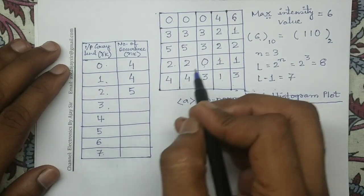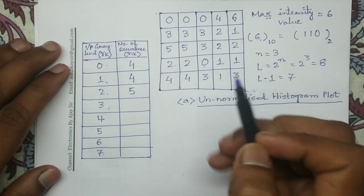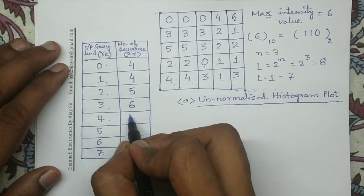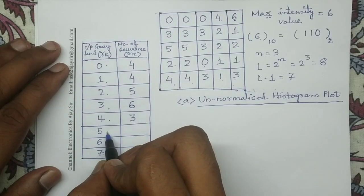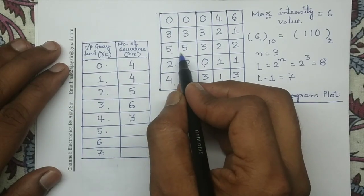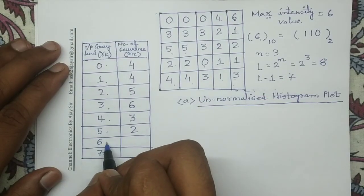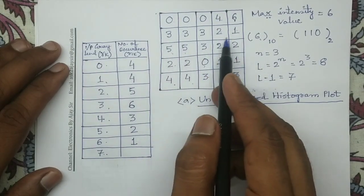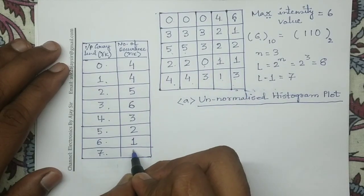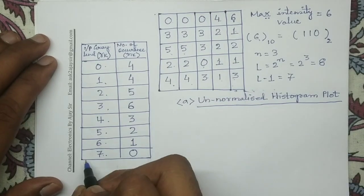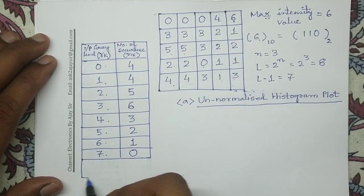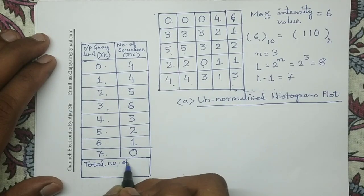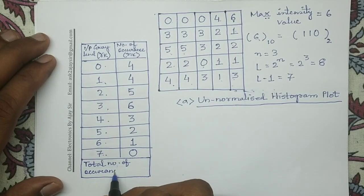For input gray level equals to 3, its corresponding number of occurrence is 6. For input gray level equals to 4, its corresponding number of occurrence is 3. For input gray level equals to 5, its corresponding number of occurrence is 2. For input gray level equals to 6, its corresponding number of occurrence is 1. For input gray level 7, since it is not present in the given digital input image, we write its number of occurrence as 0.